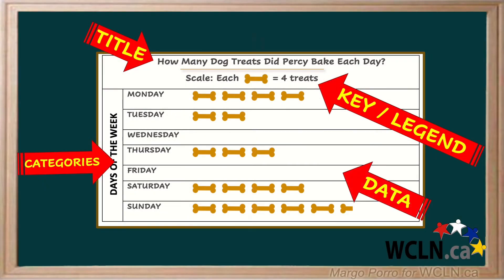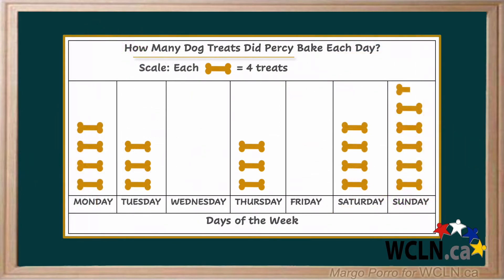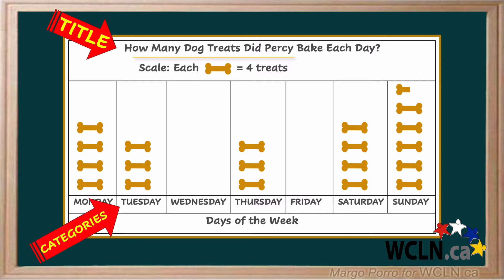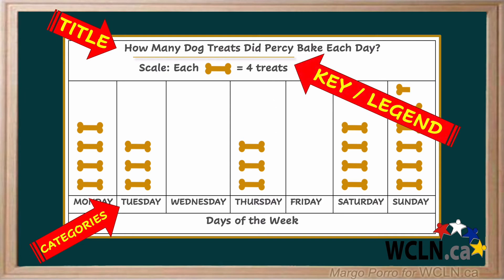Pictographs can be drawn vertically as well. The pictures in a vertical graph go up and down instead of across, but they still have the same parts: a title that tells what the pictograph is about, categories that tell what data was collected, a key or legend that shows the symbol and the scale, and data that shows how many of each item.